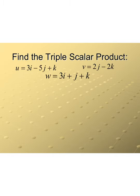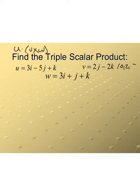For our triple scalar product example, we have vector u = 3i − 5j + k, vector v = 2j − 2k (no i component, so it's written as (0, 2, −2)), and vector w = 3i + j + k, written as (3, 1, 1). Our formula is u · (v × w), so we find the cross product of v and w first.